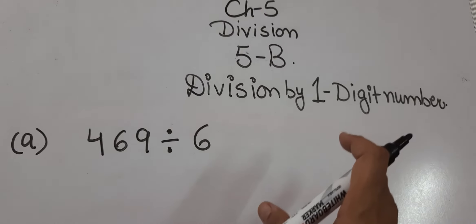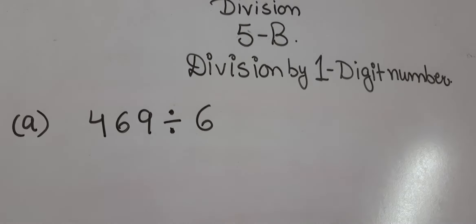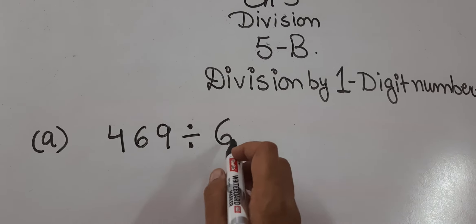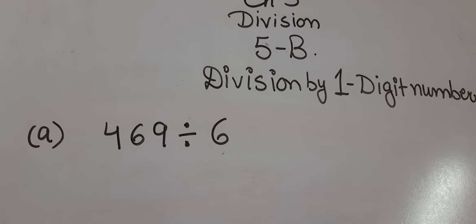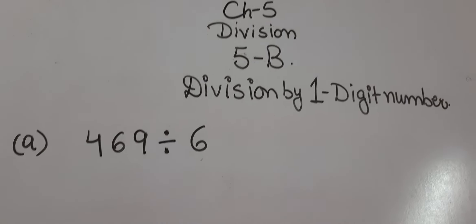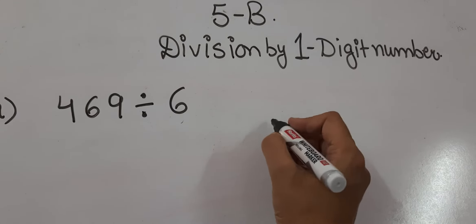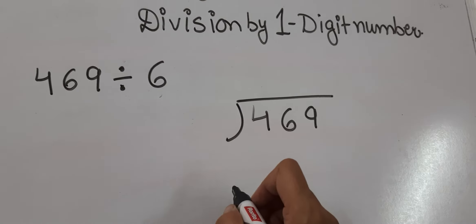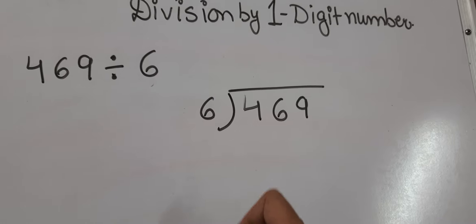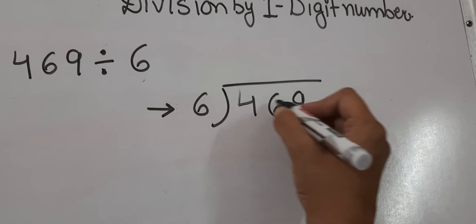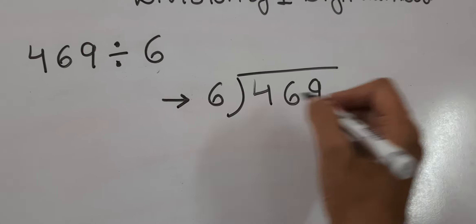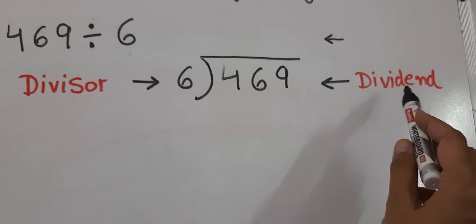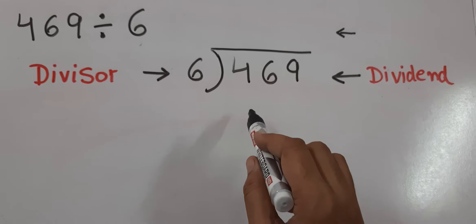Now let us move to Exercise 5B, where we will learn about division by a one-digit number. Let's take the example 469 divided by 6. We write 469 inside the division bracket and 6 outside. This 6 written outside is known as the divisor, and 469 is known as the dividend.